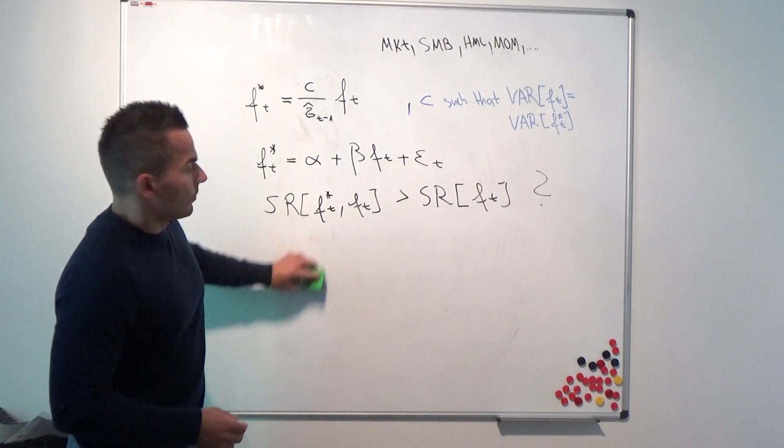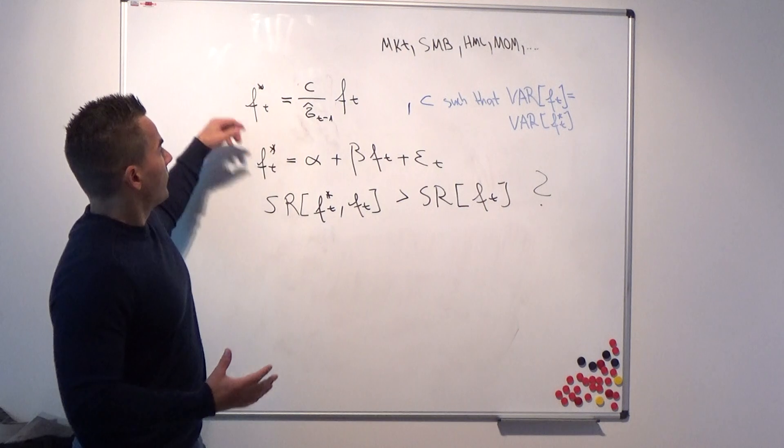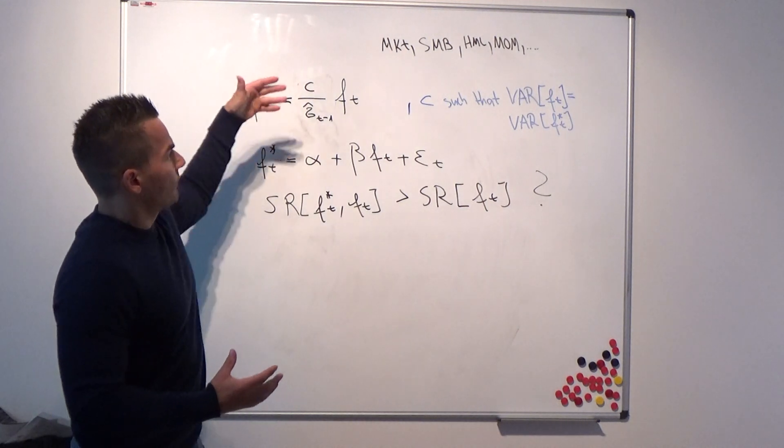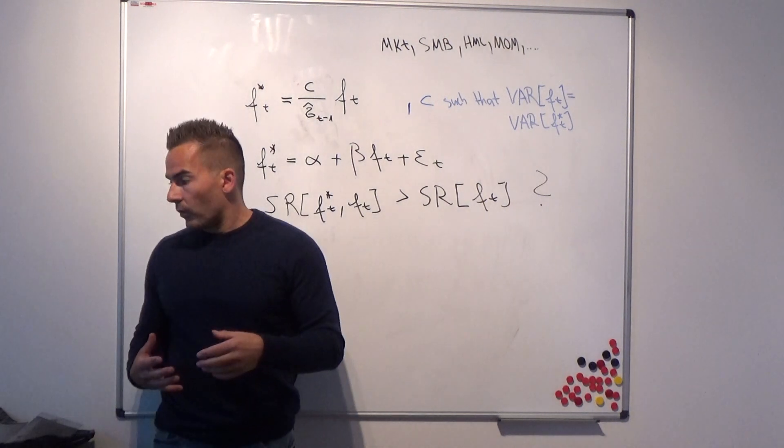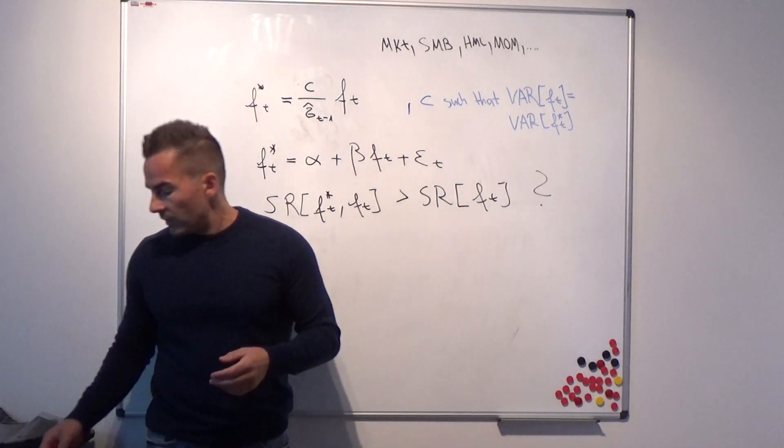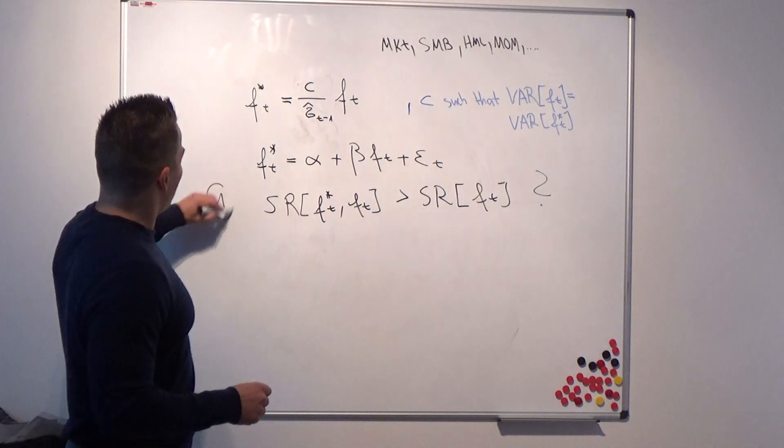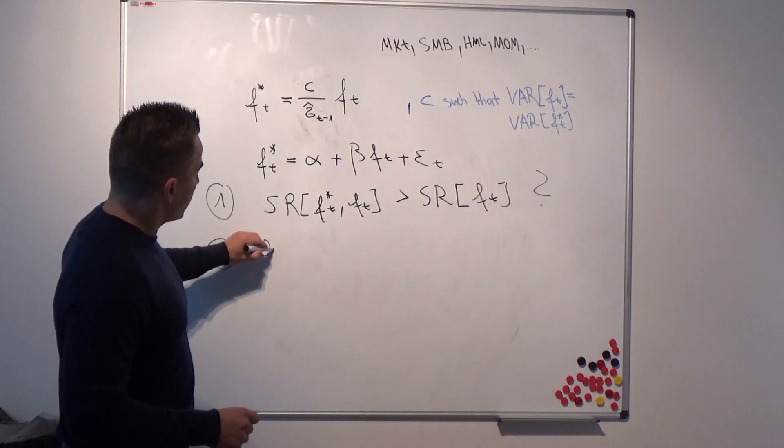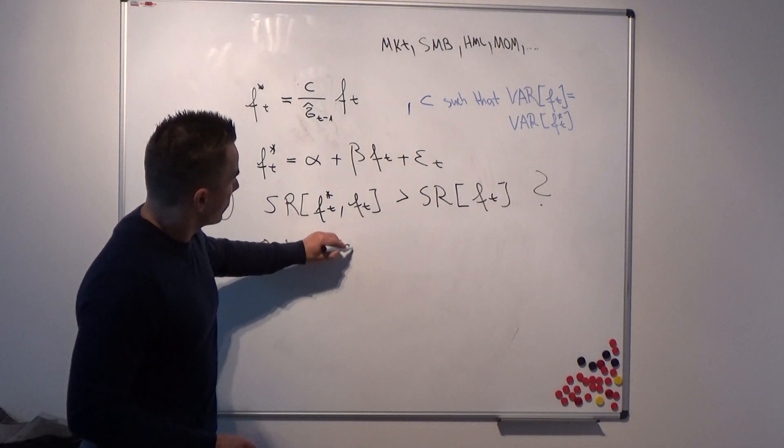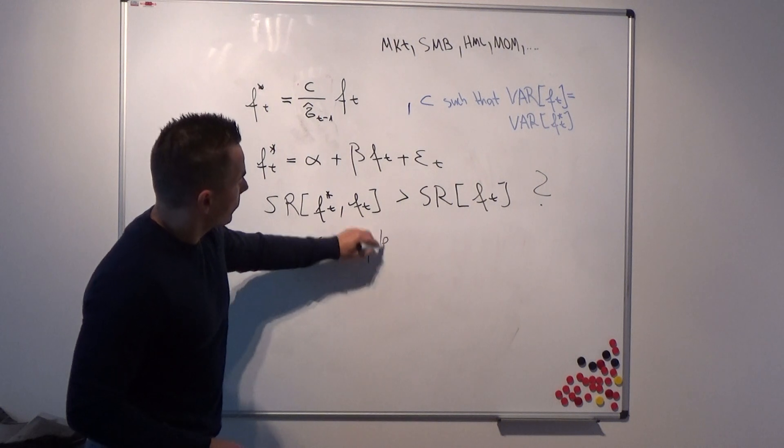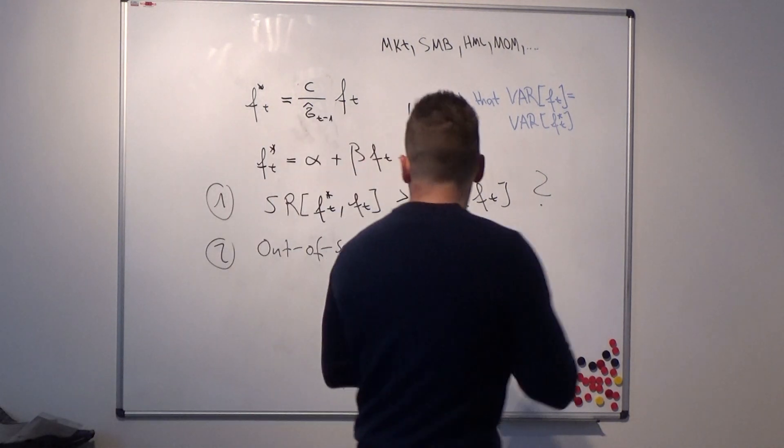In order to get a clue if this volatility-managing strategy actually works out for mean-variance investors, the authors suggest, this is the first point, second they suggest an out-of-sample experiment.